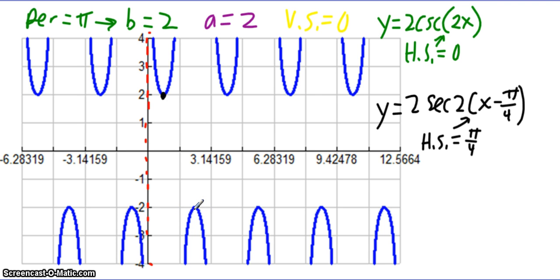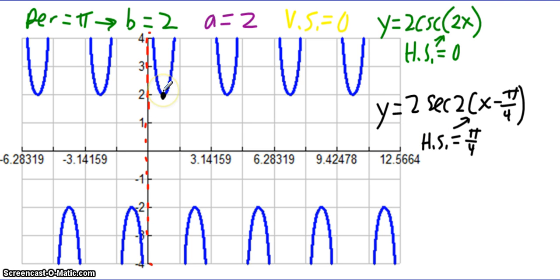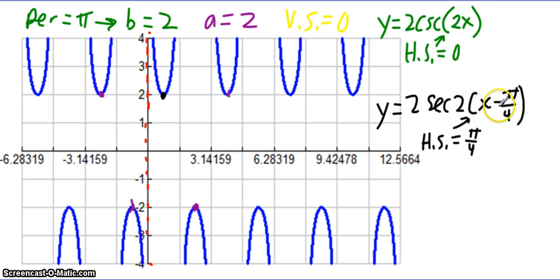For cosecant and secant, I'm going to have different horizontal shifts. I drew in one of the asymptotes here — it's on 0, therefore cosecant could start at 0. So if it has a horizontal shift of 0, it's going to be y equals 2 cosecant of 2x. For secant, I have to have some sort of horizontal shift because I have to start at one of the curve points. I chose π/4, so I said y equals 2 secant of 2 times the quantity x minus π/4. I took the b value outside of the parentheses so I can see the horizontal shift better.